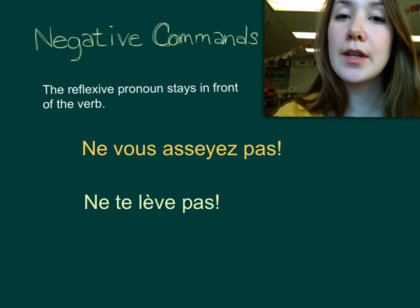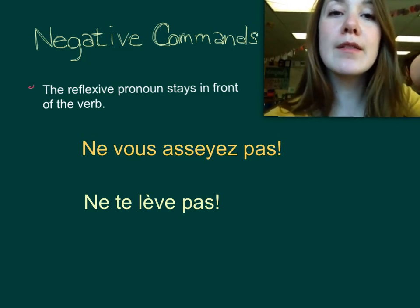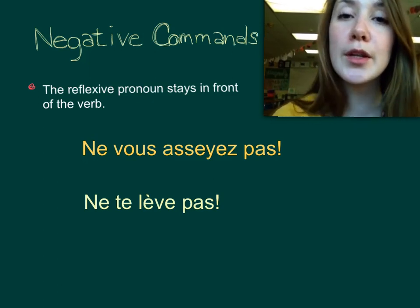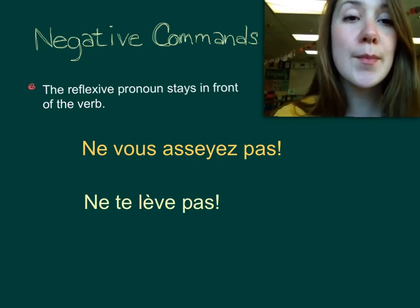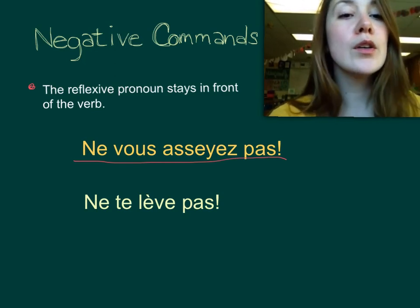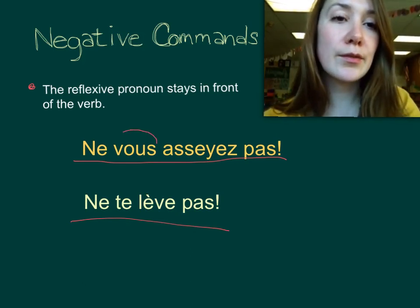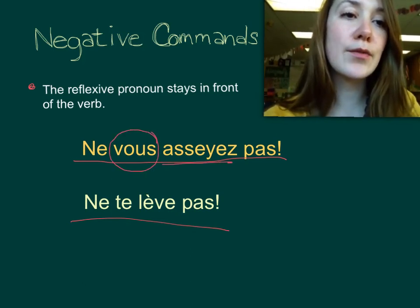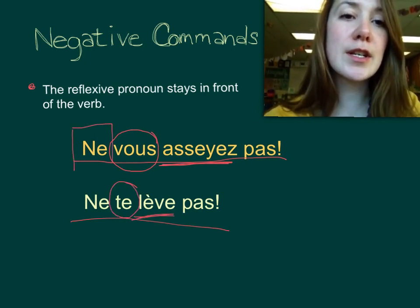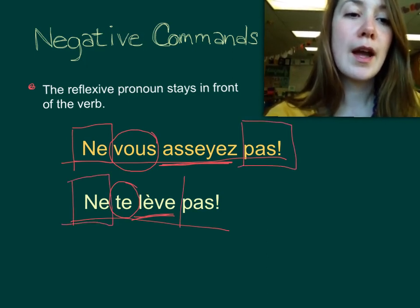For negative commands — telling someone not to do something — it's even simpler. The reflexive pronoun stays in front of the verb, so the word order is much more similar to what we've been familiar with so far. For example, ne vous asseyez pas — don't sit down. Or ne te lève pas — don't get up. Notice that the reflexive pronoun is in front of the verb, and in each example, both the verb and reflexive pronoun are surrounded by ne and pas.